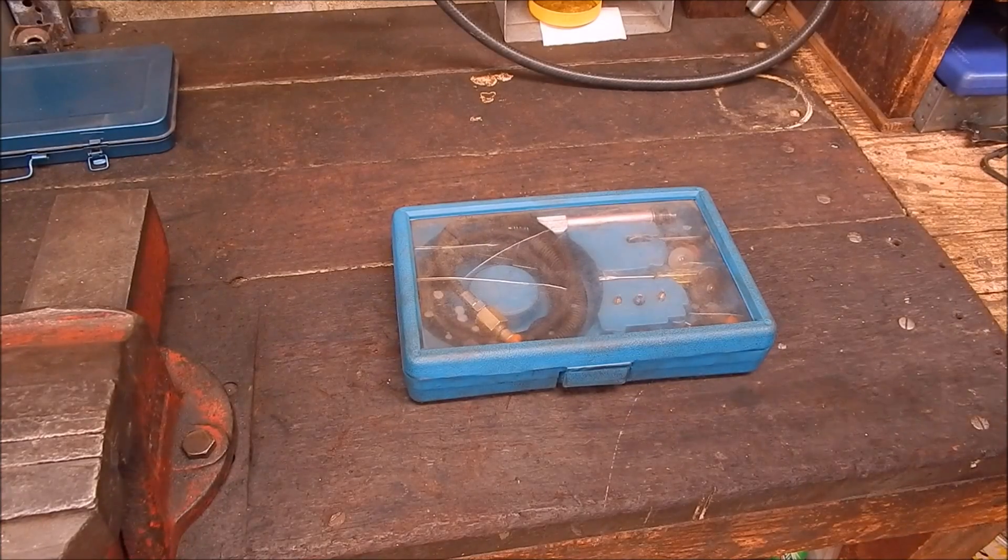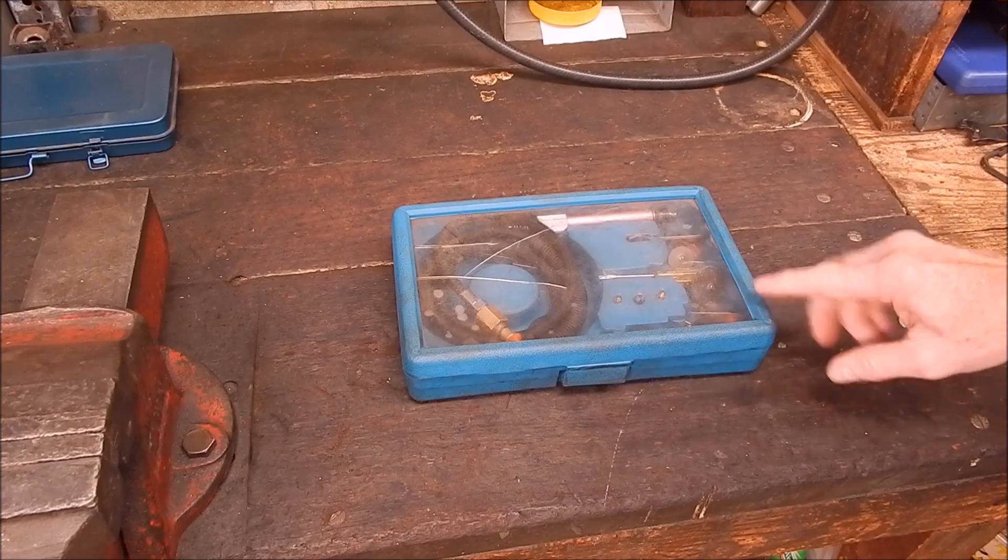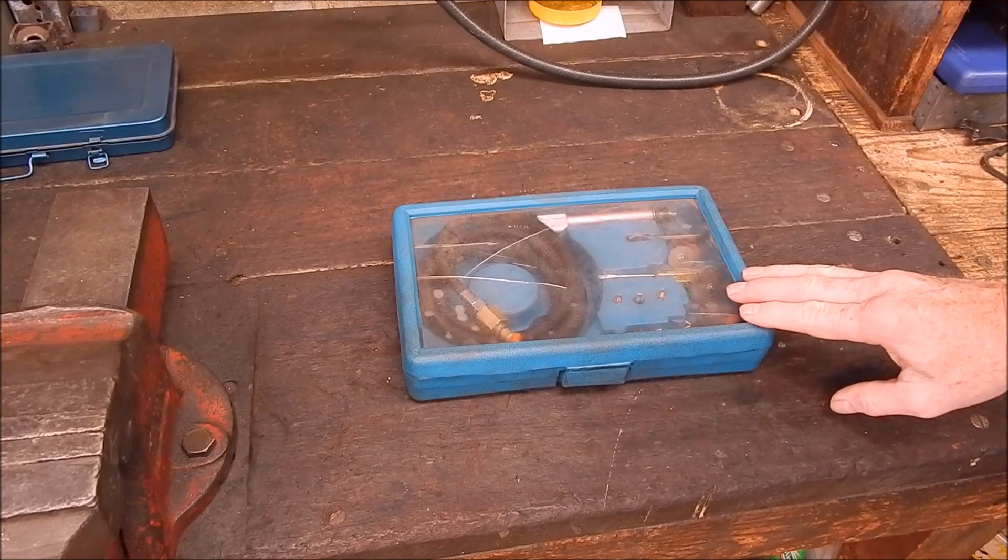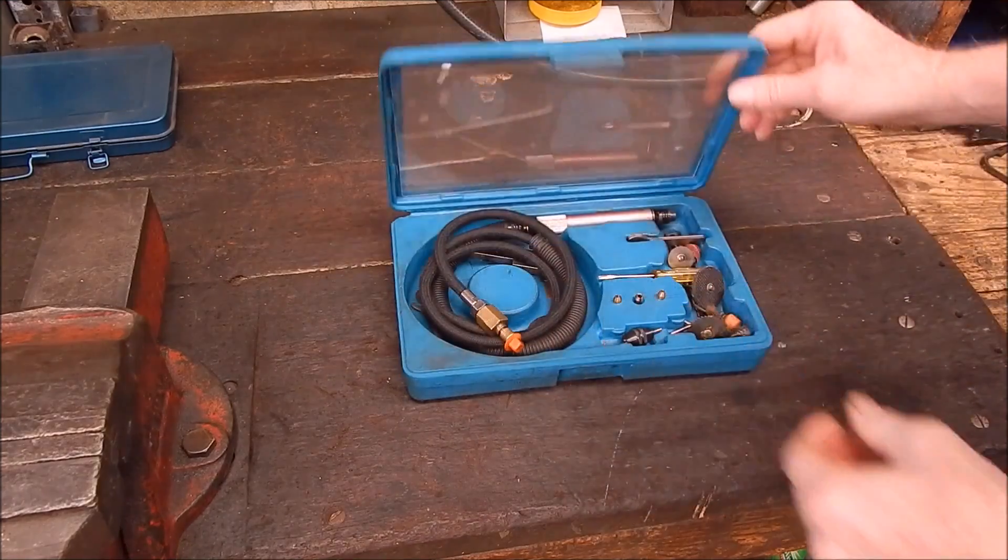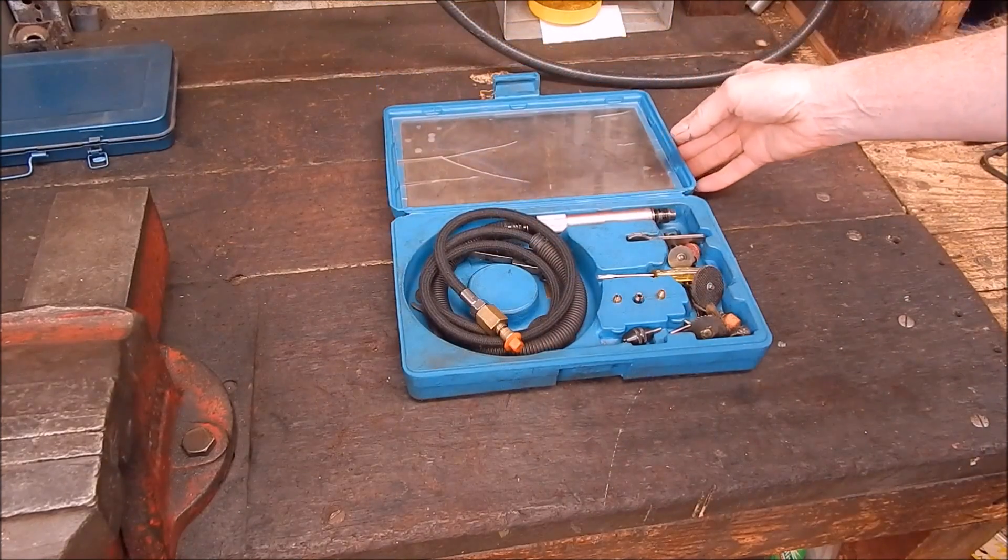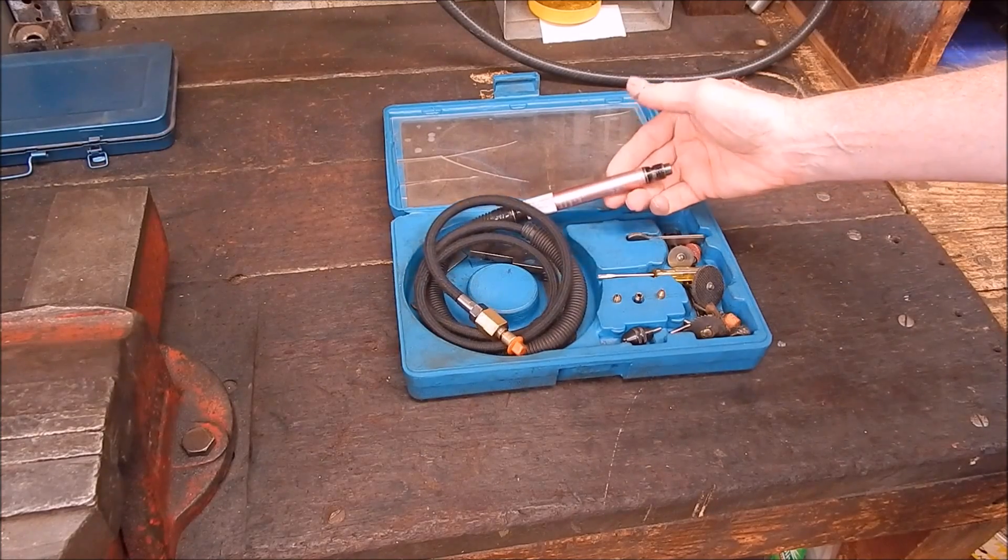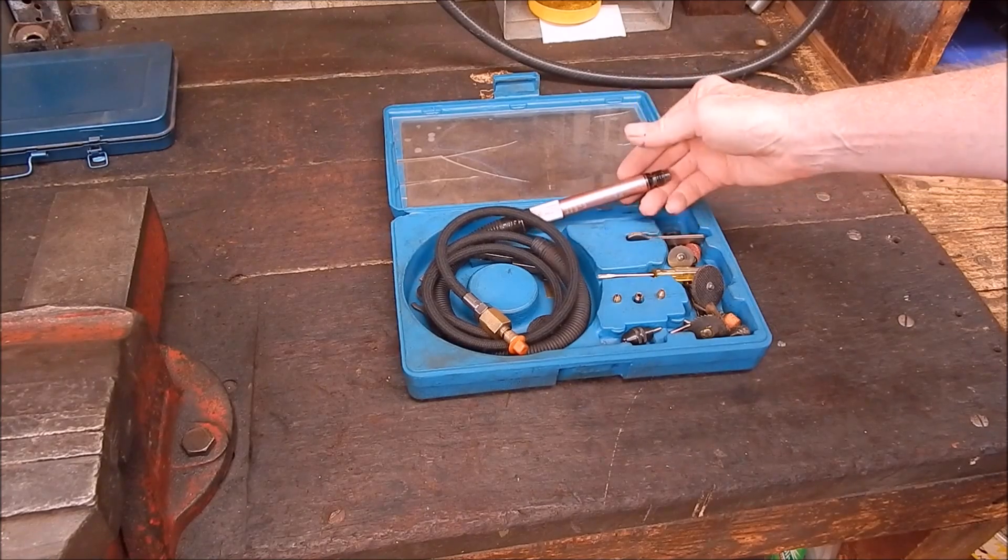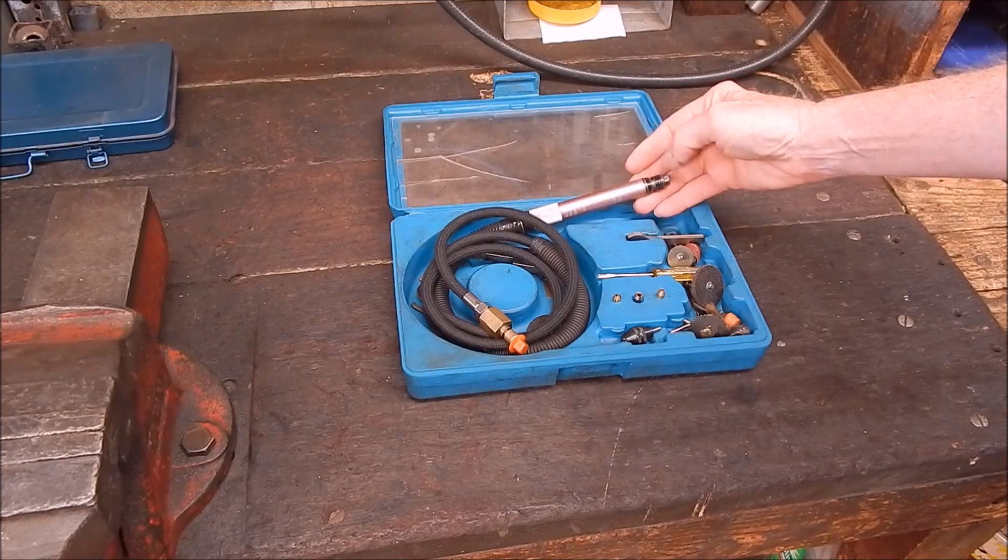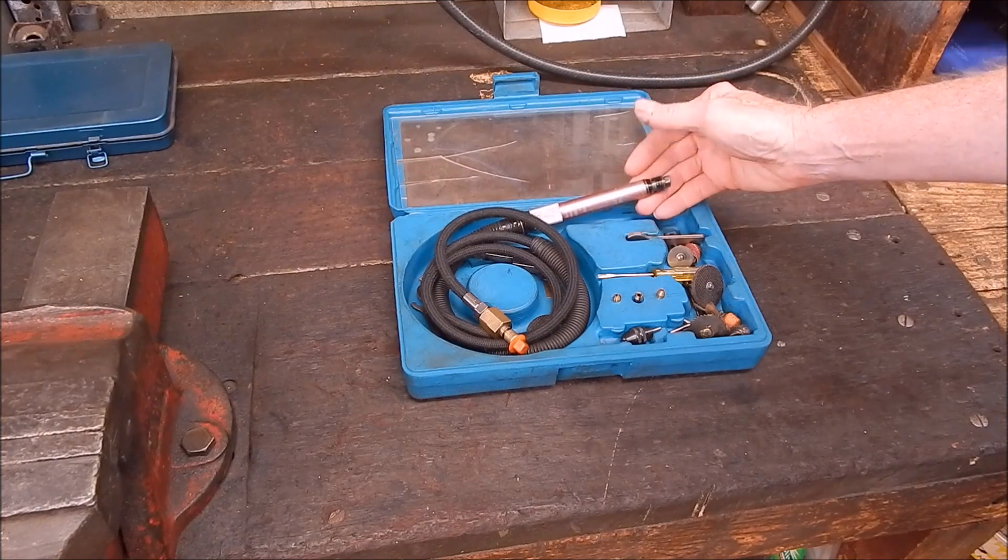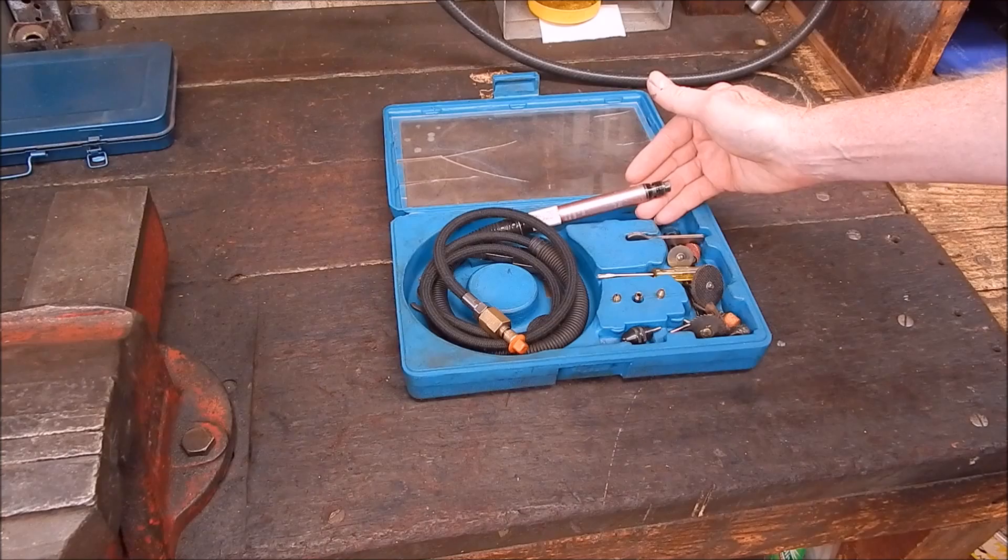G'day, it's Rob here again. Over the years doing these videos I've shown you one of the most useful little gadgets I think you can have in the workshop, and that's my little pencil air die grinder kit. These are not expensive, they're very cheap, you just need a compressed air supply and you can grind and cut and drill and do all sorts of things with these. They're really good for the money, they're fantastic.